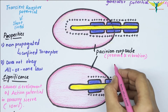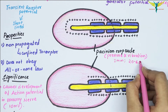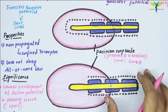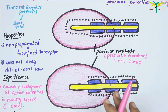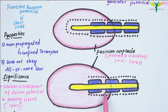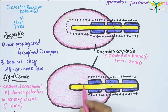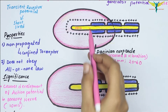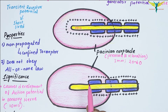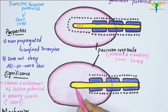Each corpuscle is approximately oval-cylindrical in shape, measuring about 1 mm in length. It is covered by a capsule formed by 20 to 60 concentric lamellae of connective tissue. The lamellae are thin flat layers with epithelial cells and also contain modified Schwann cells. In the center of the corpuscle, a single unmyelinated afferent nerve fiber is present — the sensory component — visible as the central core fiber.